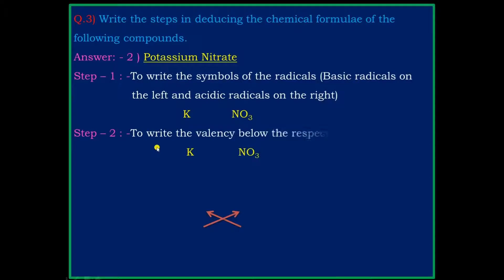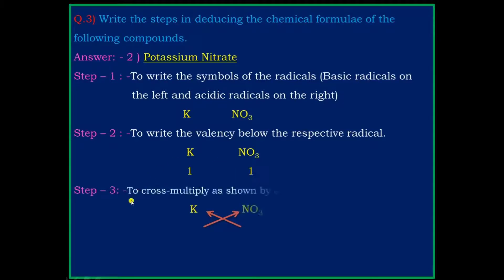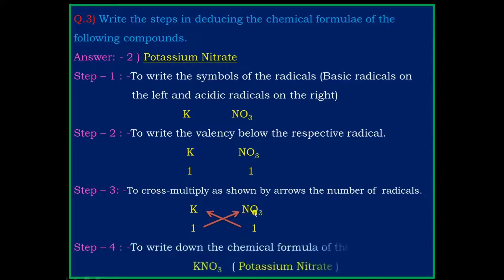Step 2: write the valency below the respective radicals. The valency of potassium is 1 and the valency of nitrate is also 1. Step 3: cross multiply as shown by the arrow — cross multiply the valency with their radicals.